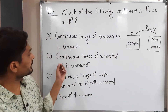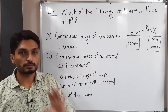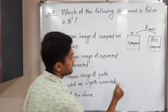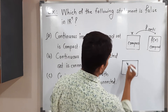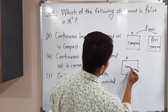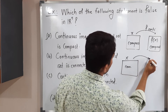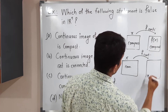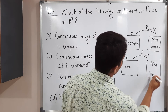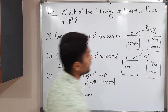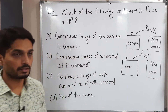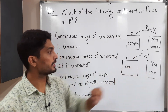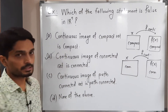We have to find a false statement. Next: continuous image of connected set is connected. Suppose X is connected and function F is continuous, then its image F(X) is also connected. So image of a connected set under a continuous function is connected — this is also a correct statement.